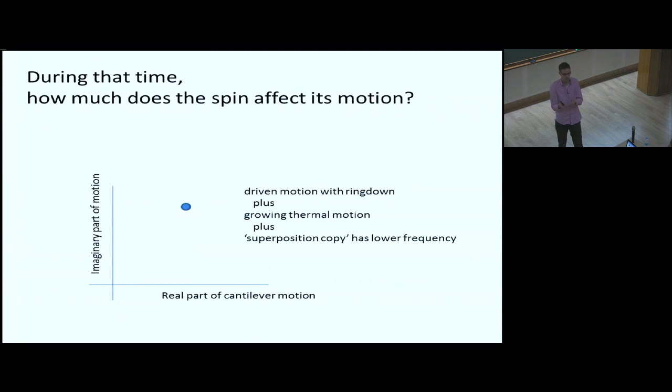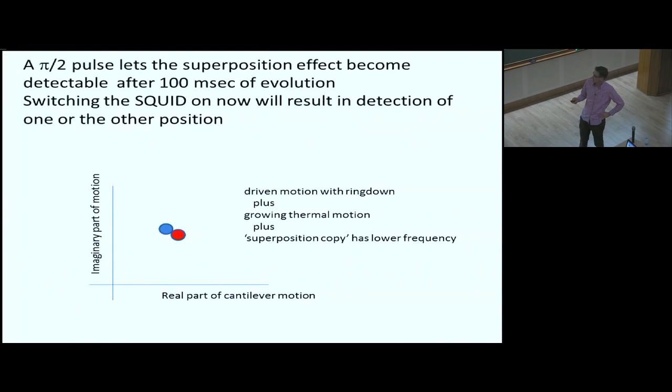So then we can ask if we bring our force sensor close to an NV diamond, how much difference does it make to the motion? So if the spin is attractive, then this is the magnet on the mechanical force sensor, this is the spin. If they attract, then the resonance frequency will be a little bit slower than if they repel. So the idea is if I have a situation in which I have repulsion and attraction simultaneously because the spin is in the superposition of state, then these two copies will run out of phase. And within, if we let that happen for 100 milliseconds while the drive, the original motion was 10 nanometers, which is a reasonable amplitude, then the separation would be larger than the thermal motion that it has acquired.